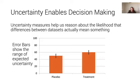Well, one thing we can do is we can put error bars on to provide some measure of the range of expected uncertainty. For example, if my error bars looked like this, I could probably say with a fair bit of confidence that the treatment has higher values than the placebo.